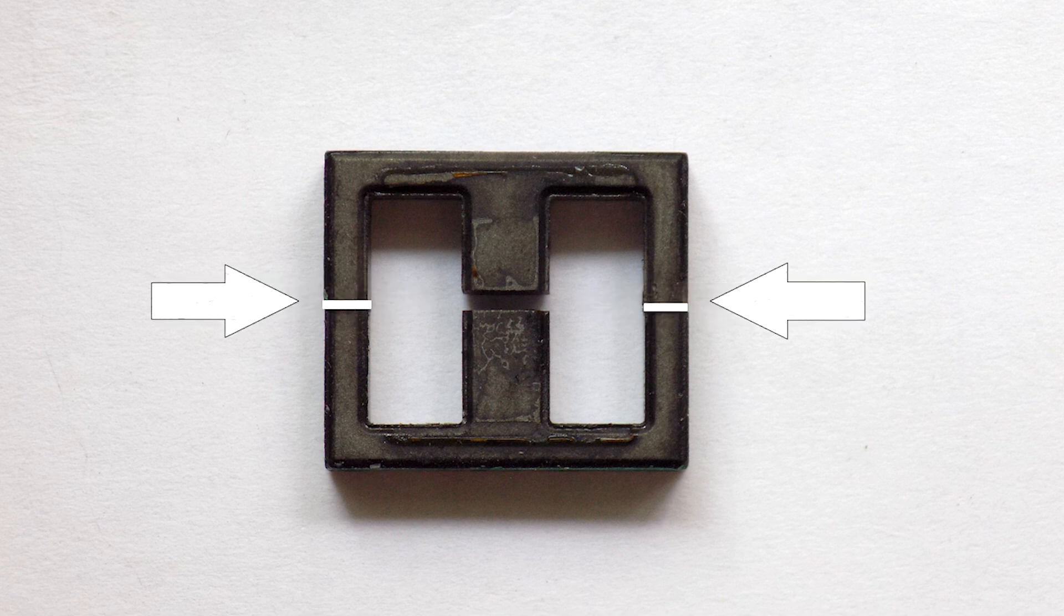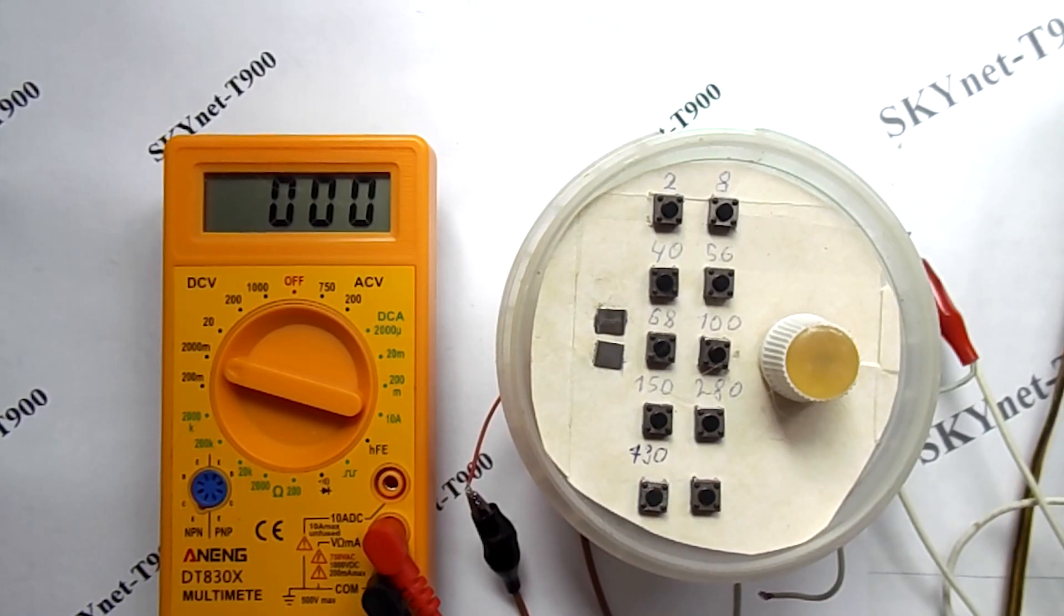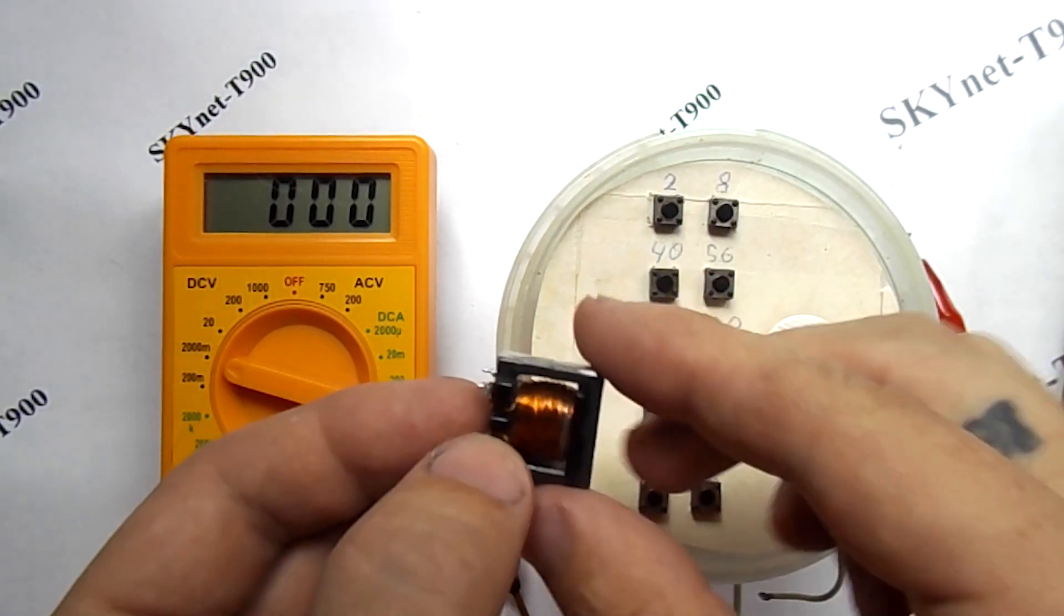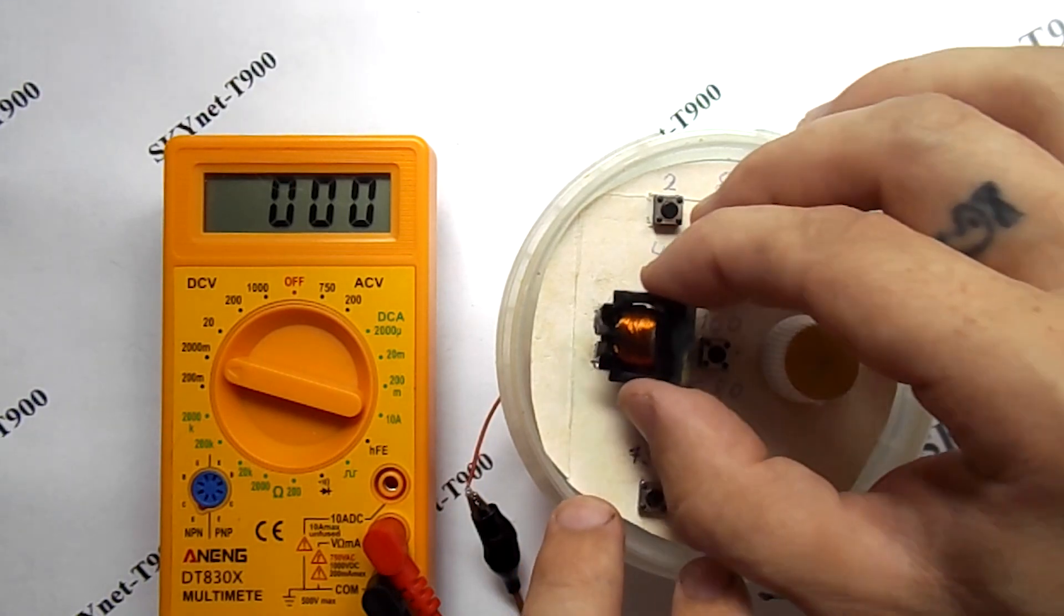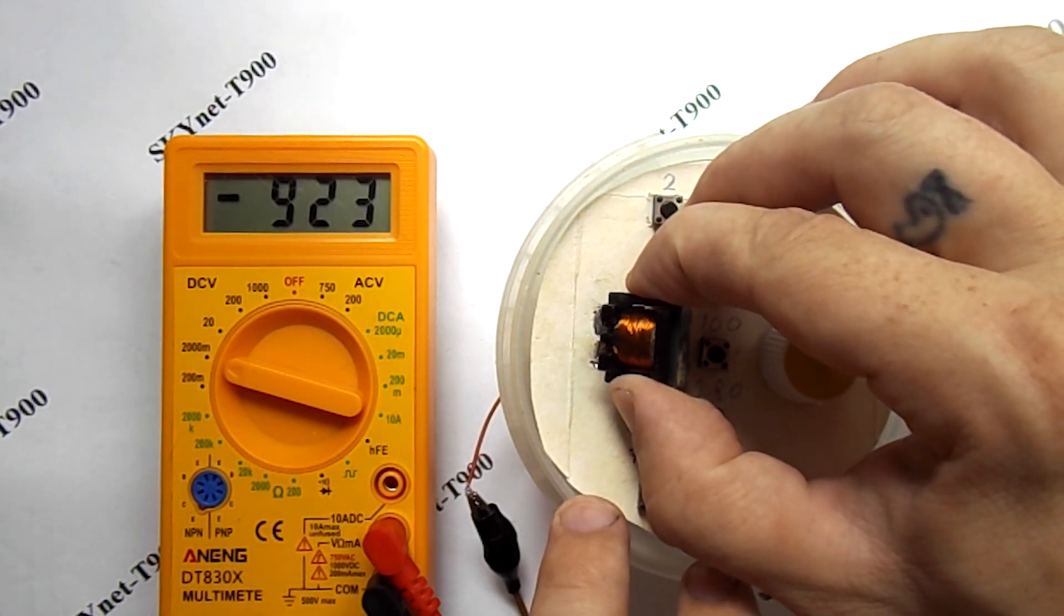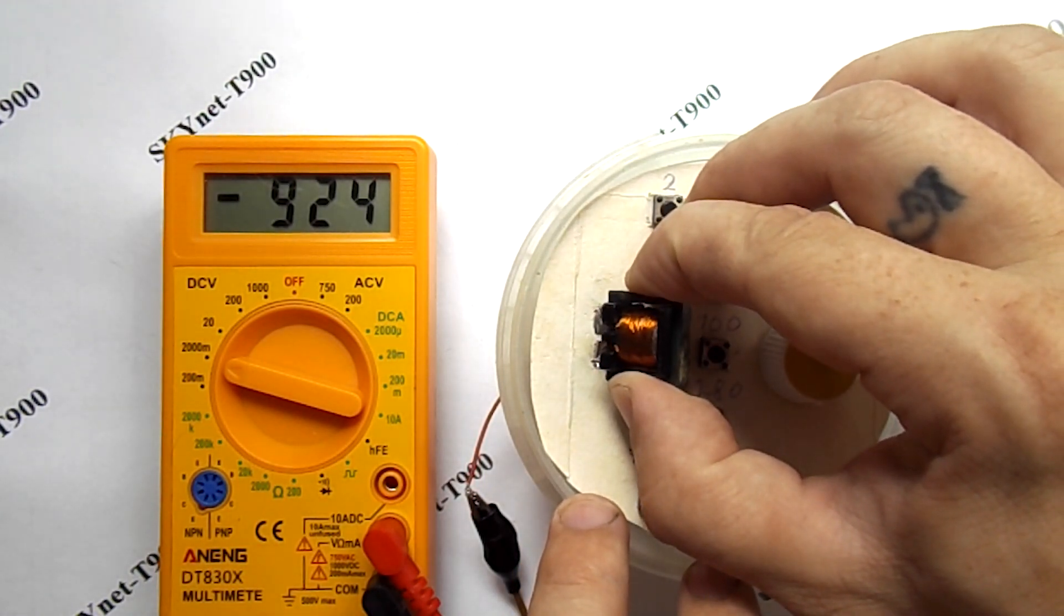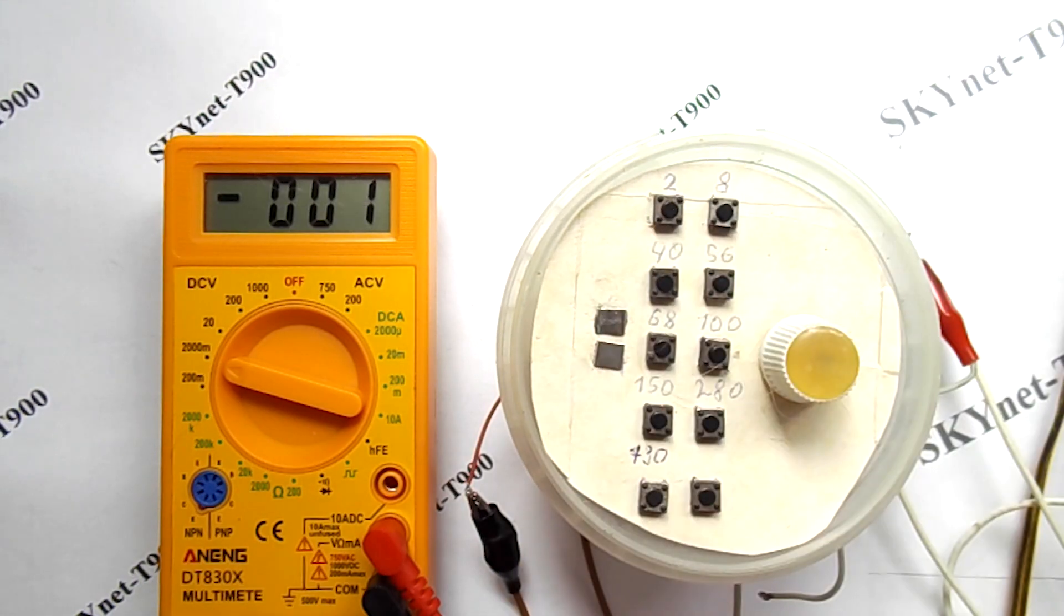To do this, I just filed the side legs with a file. Unfortunately, this has to be done at random, constantly measuring the inductance. Then I adjusted the inductance to 900 microhenries, and then up to 1000, only I didn't capture it on camera. Then I did not grind, stopping at this option.